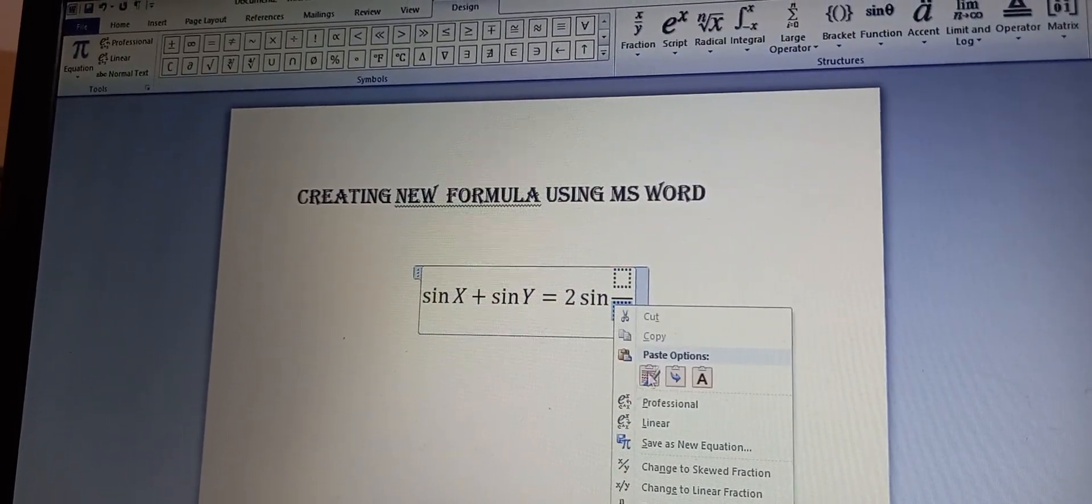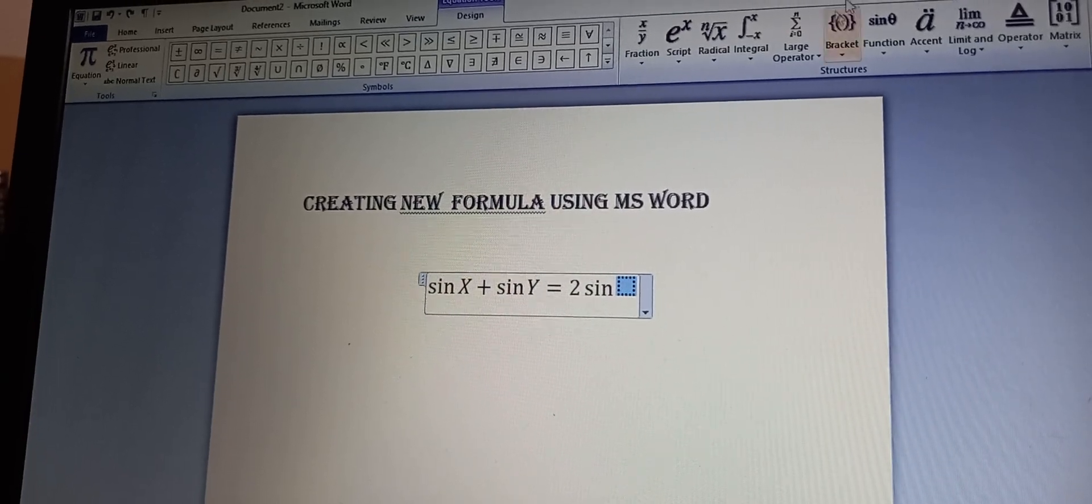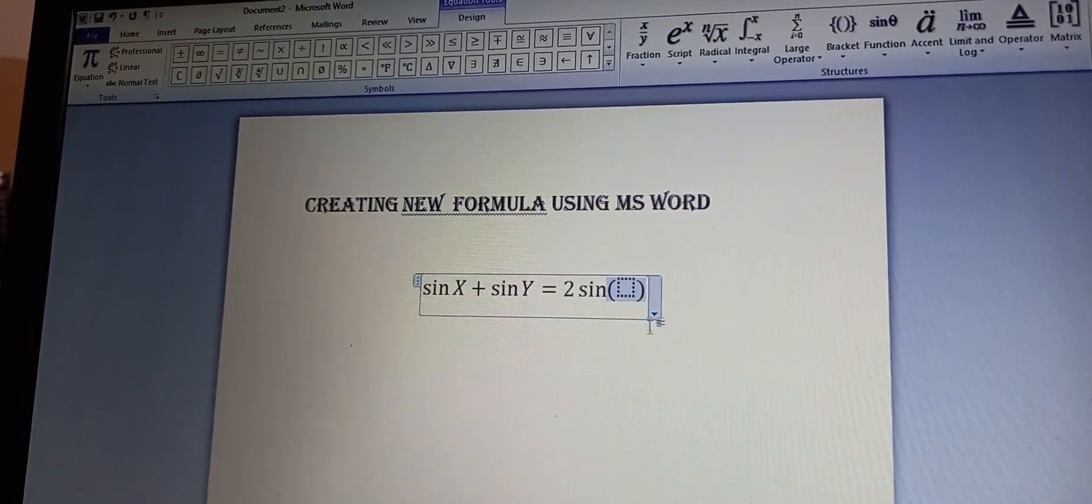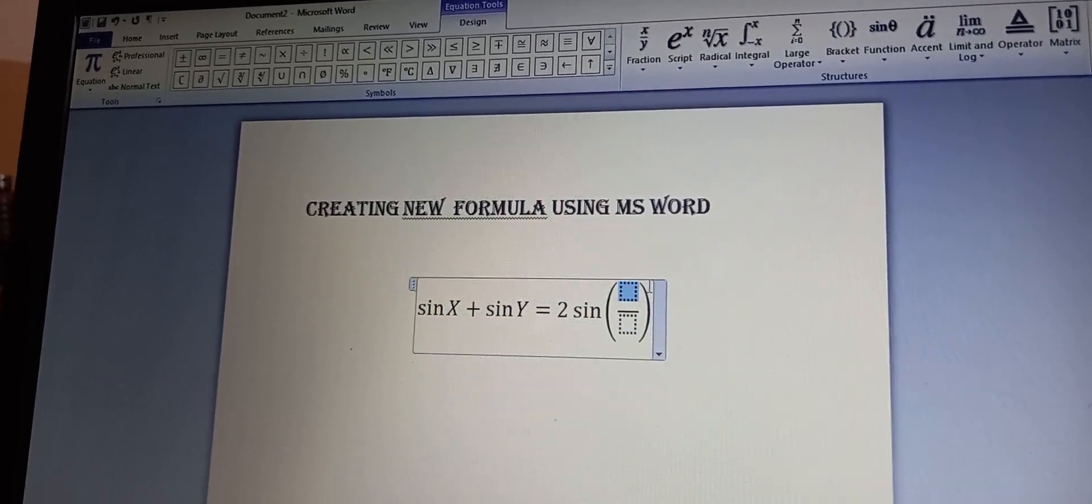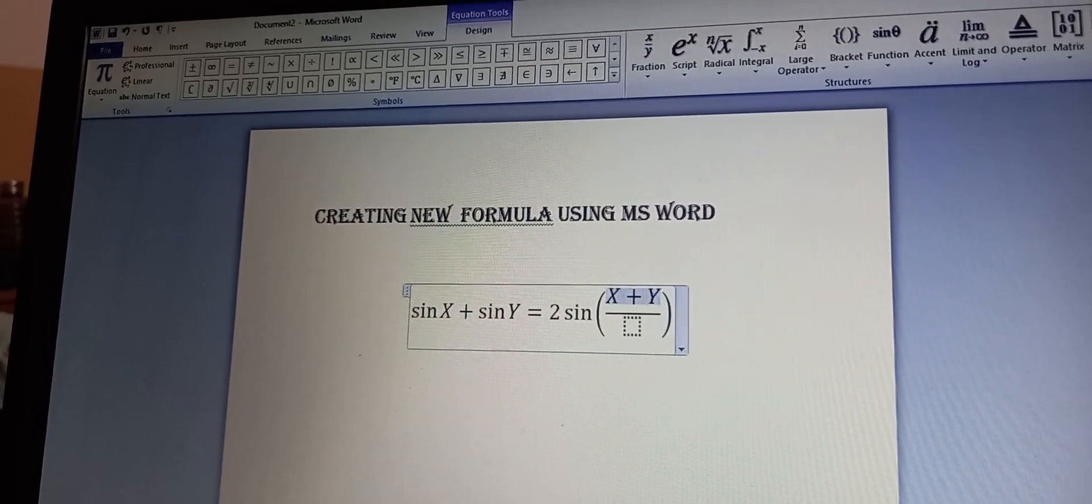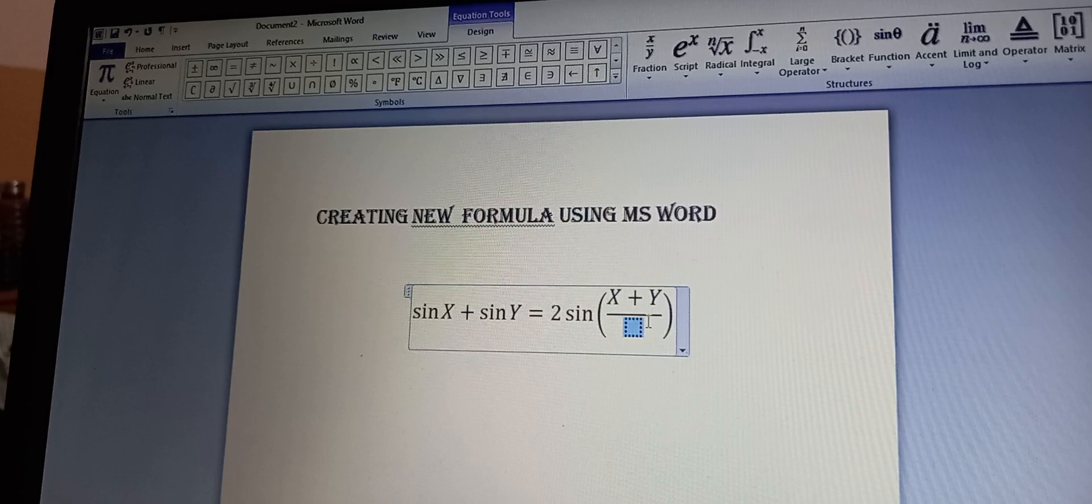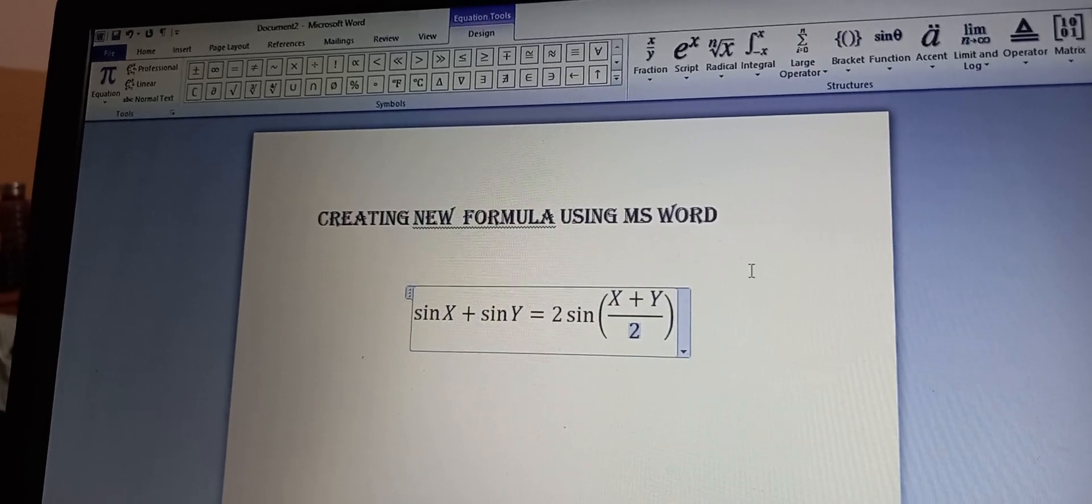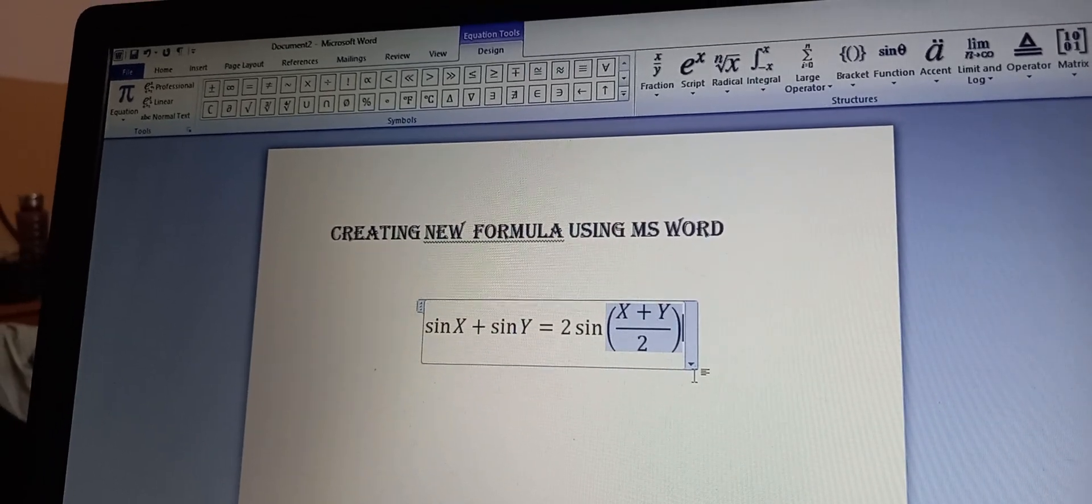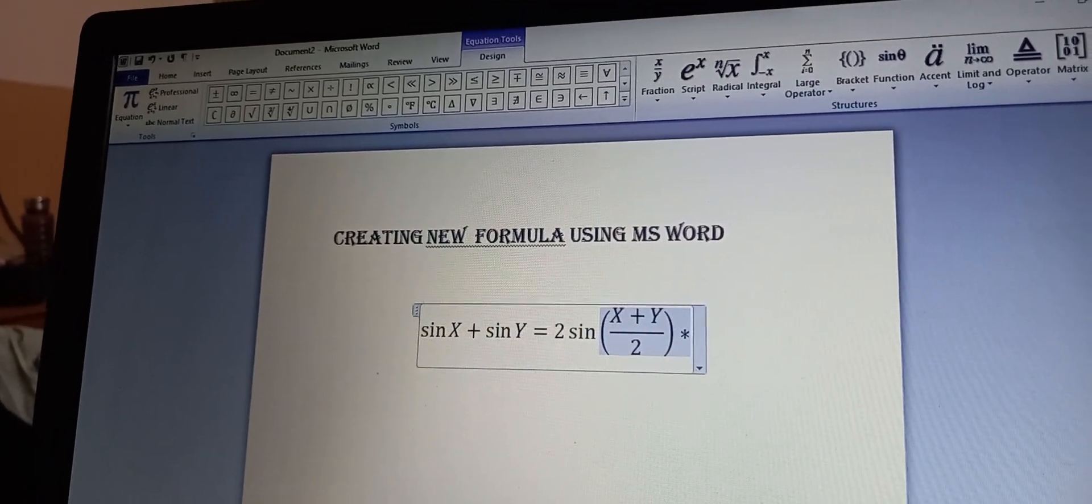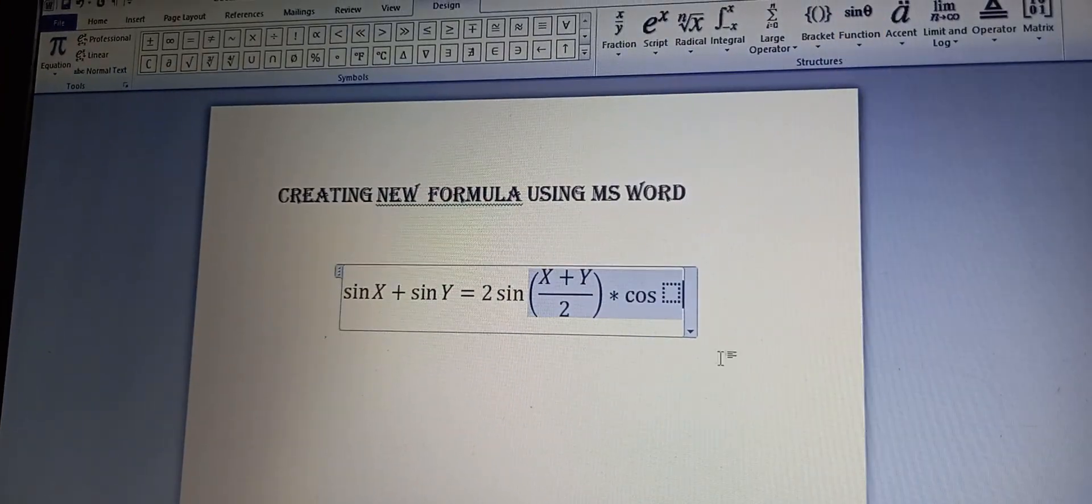First, select a box and add a bracket, then select the inside box. Select a box and write x plus y, that's divided by 2. Then it's multiplication, then cos, then again...